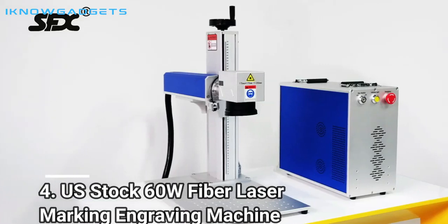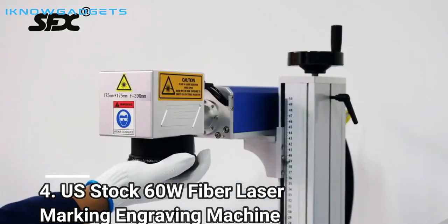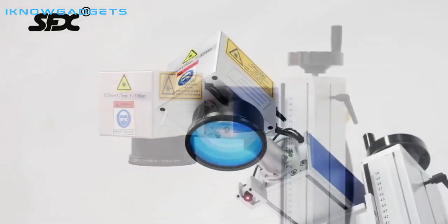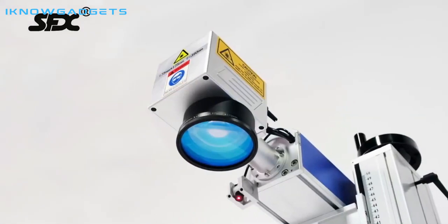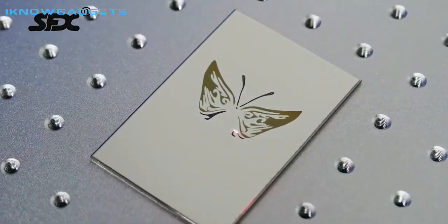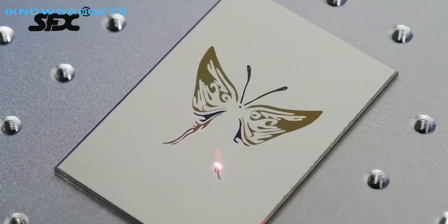Number 4. U.S. Stock 60-Watt Fiber Laser Marking Engraving Machine. The U.S. Stock 60-Watt Fiber Laser Marking Engraving Machine is a powerful and reliable tool for precision processing applications.